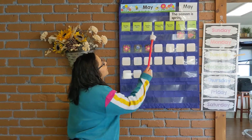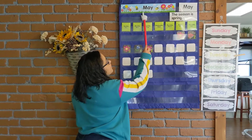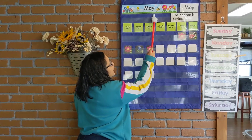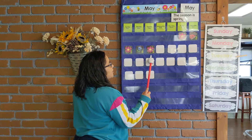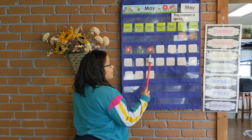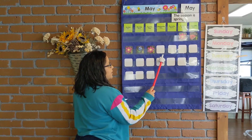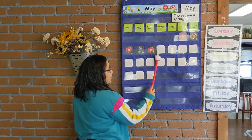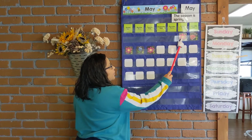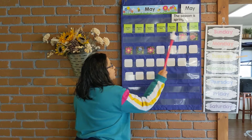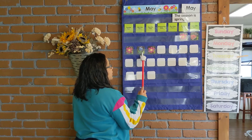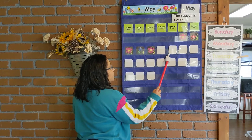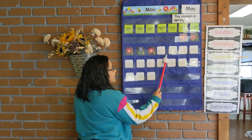Okay, it is May. We are in the month of May. Yesterday was the fifth, so we're going to count to see what today is. One, two, three, four, five, six.